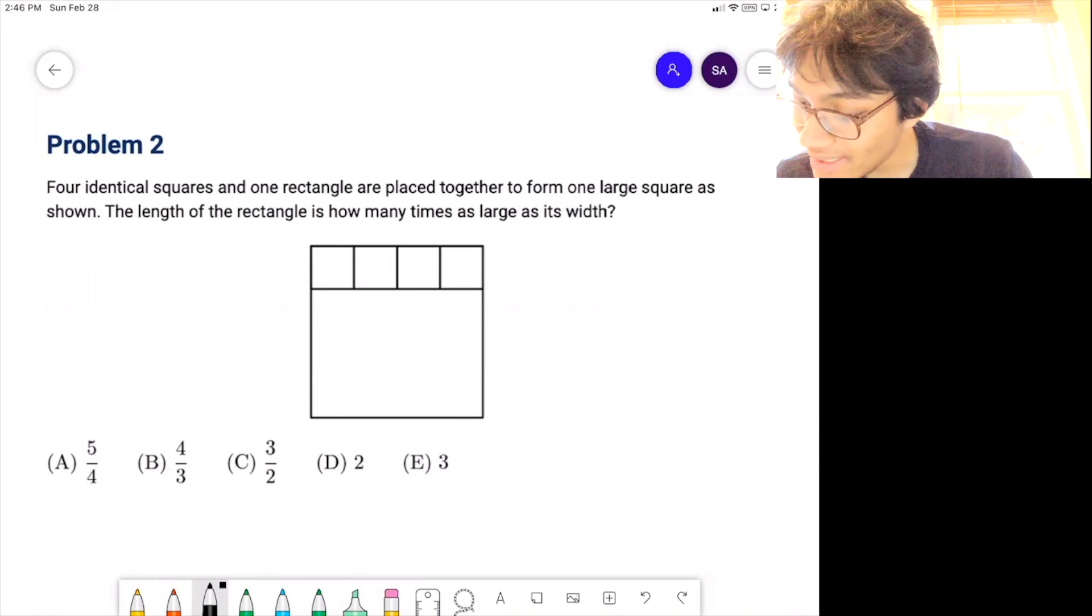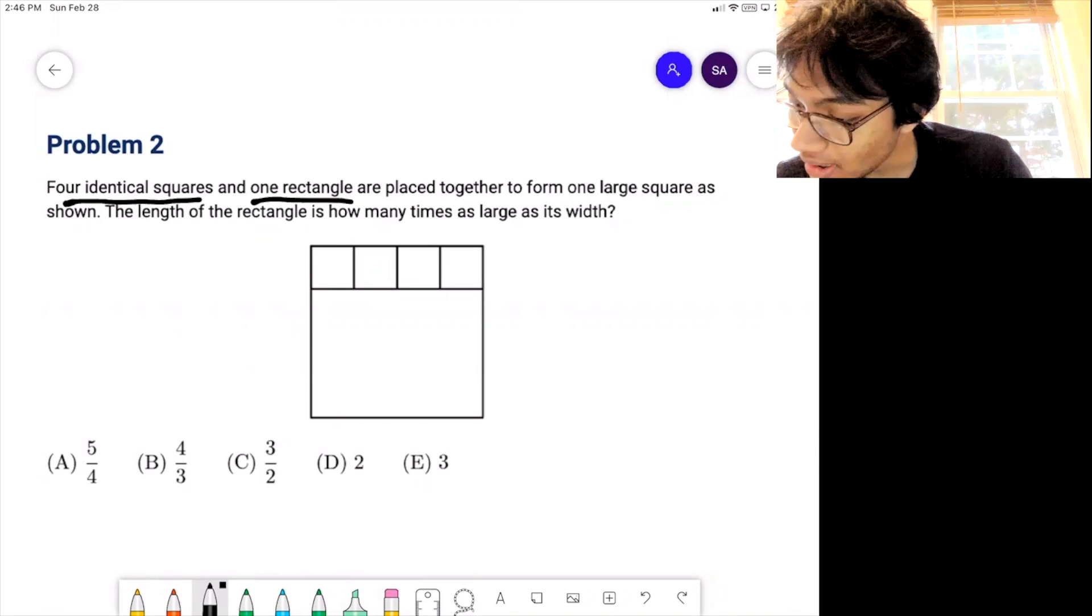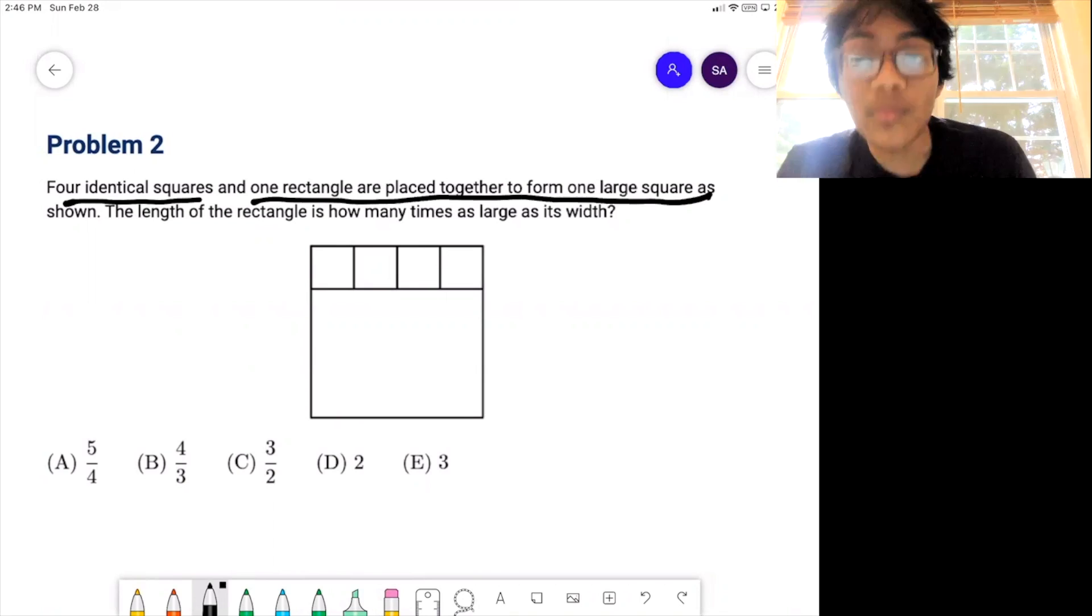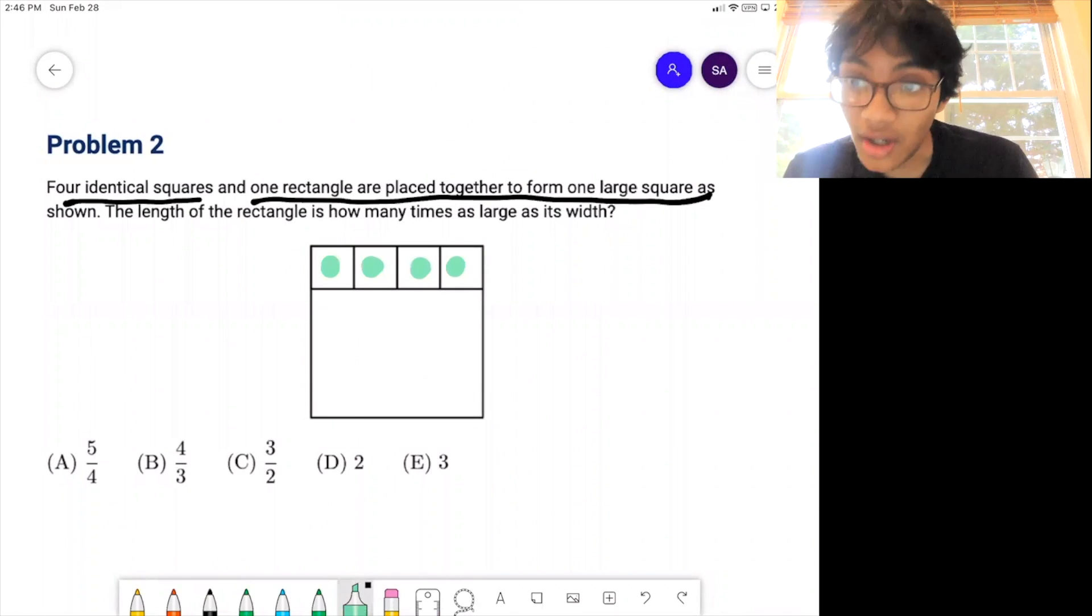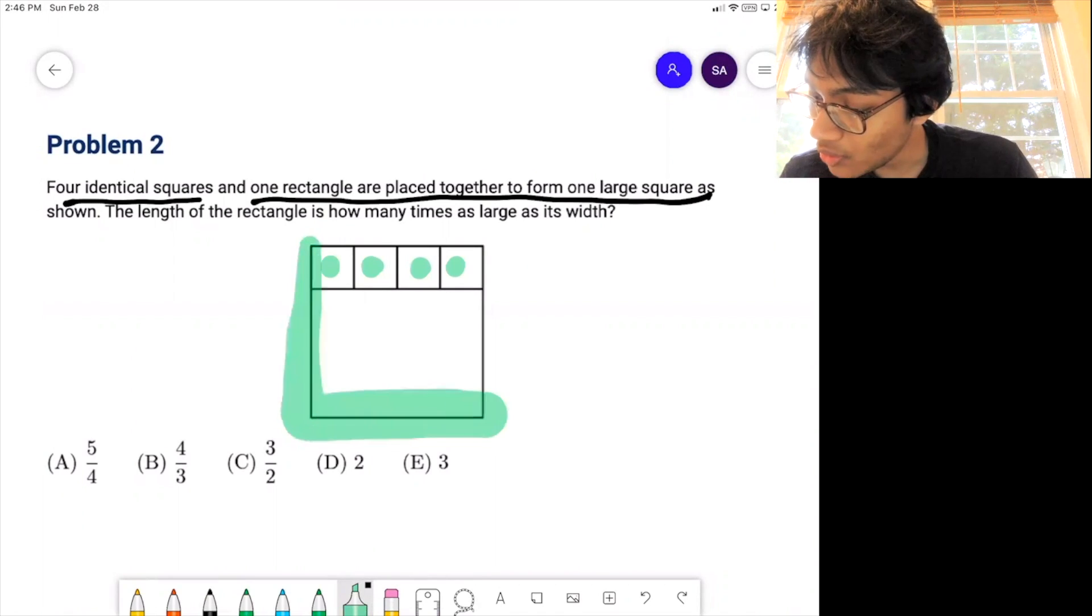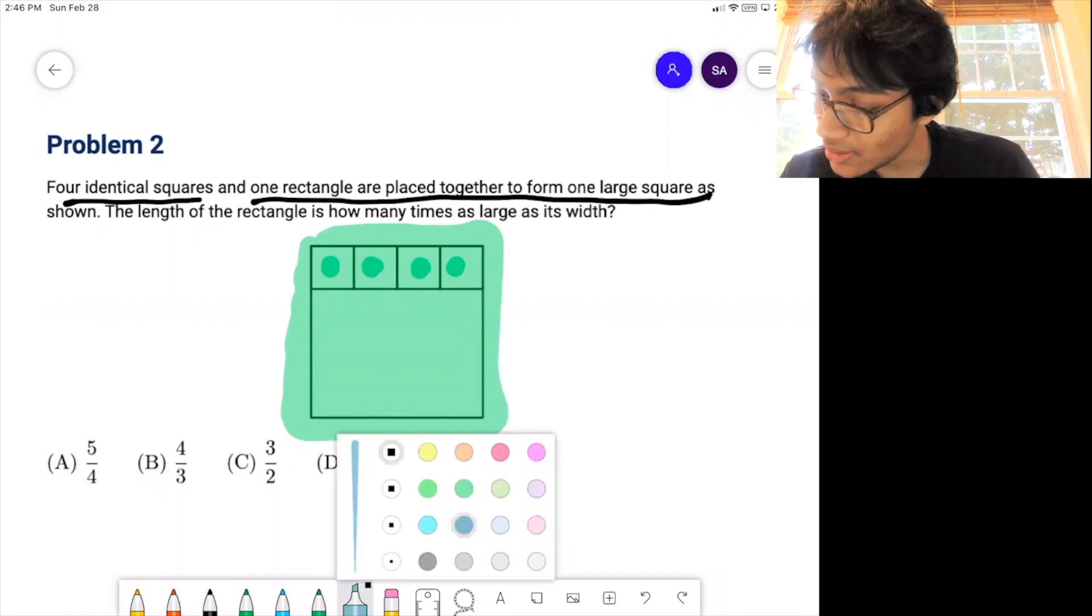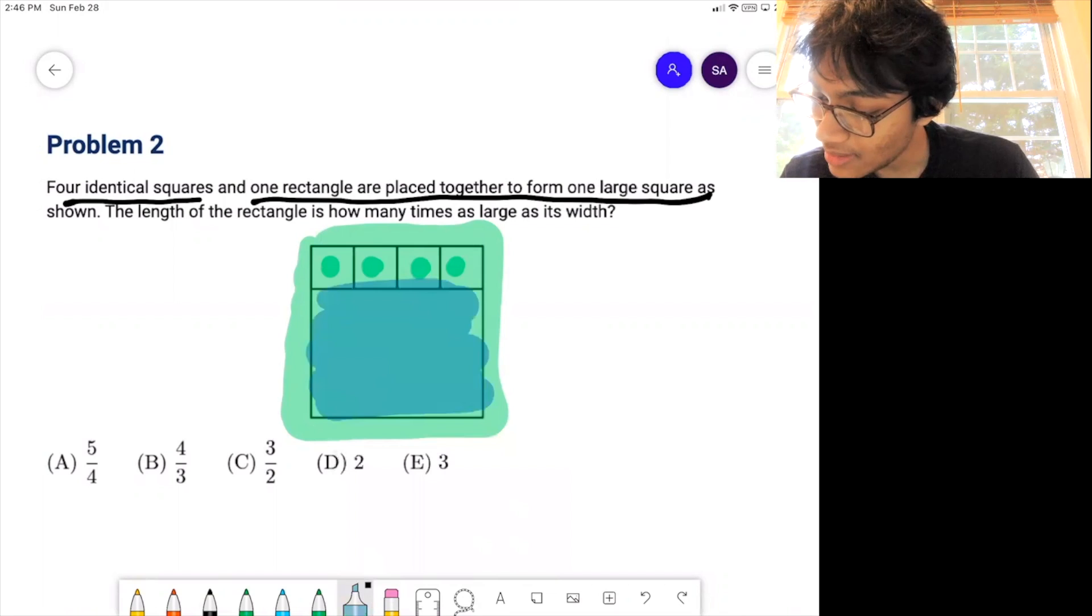Alright, let's read it. Four identical squares and one rectangle are placed together to form one large square as shown. So that means this, this, this and this are all squares. And the whole thing, this whole thing over here is also a square. The only thing that's a rectangle here is this one, this little rectangle right over here. So the question is the length of the rectangle is how many times larger than its width.